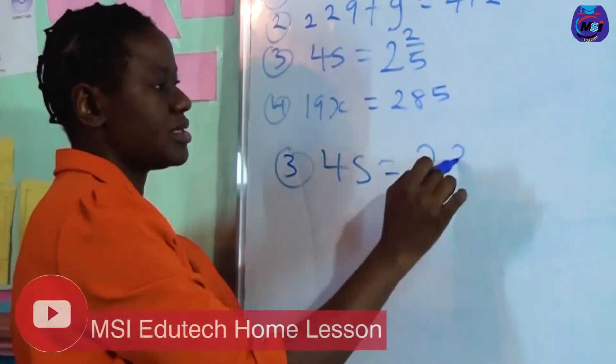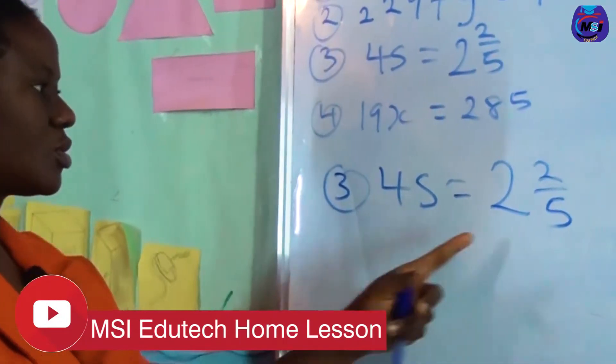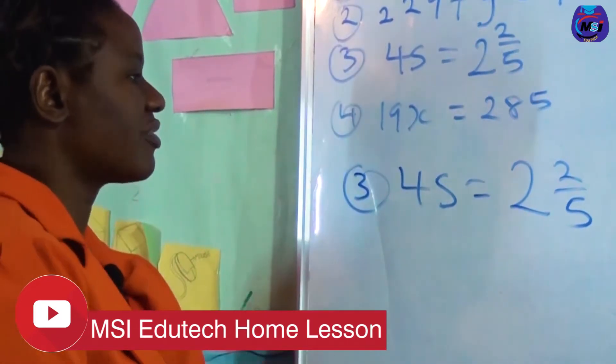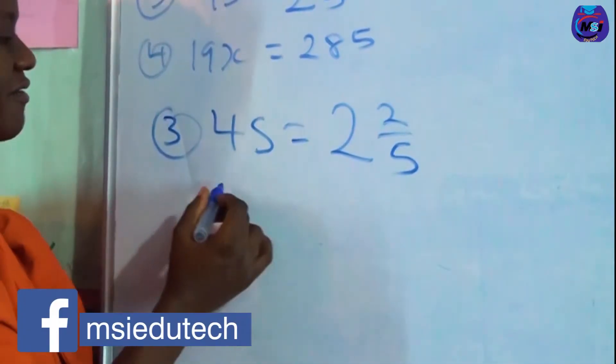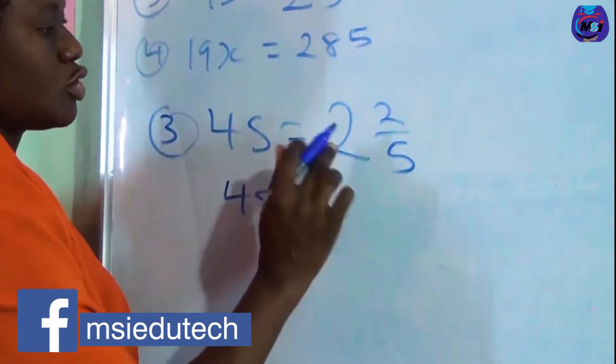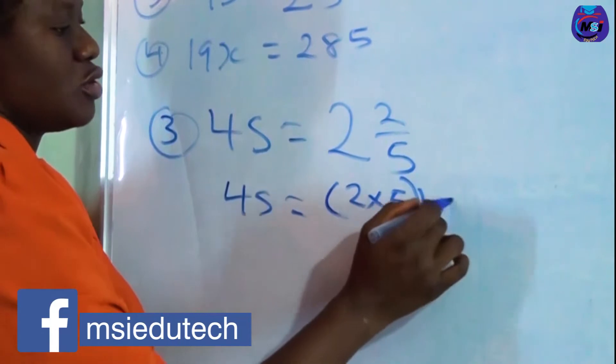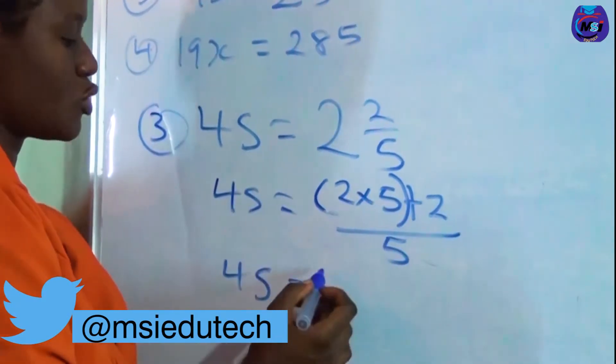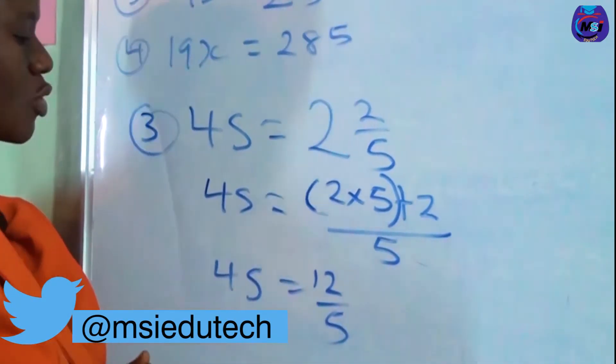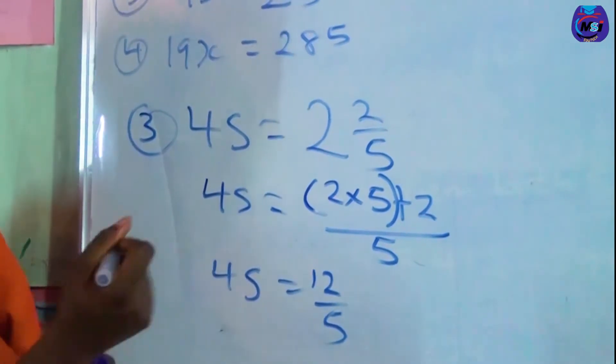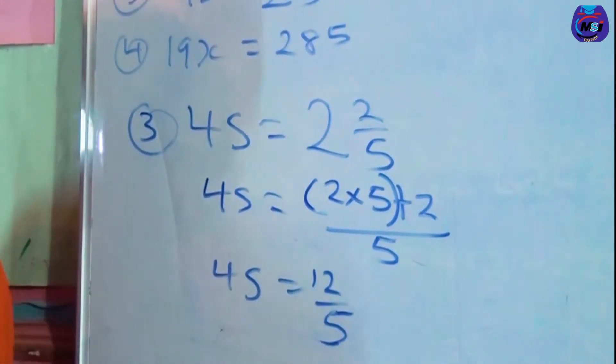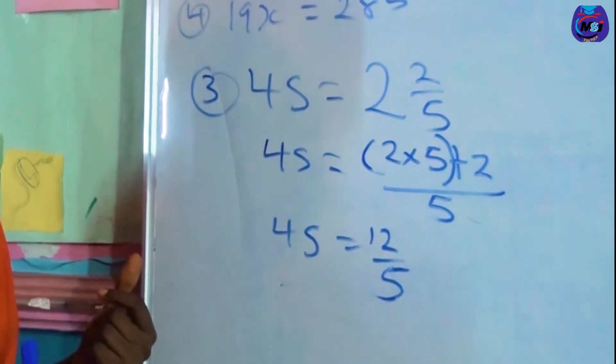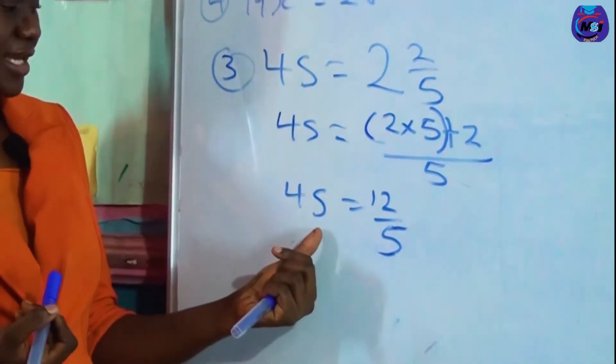4x equals 2 and 2 over 5. We are looking for x. But before then we need to work on this mixed fraction. 4x equals 2 times 5 is 10 plus 2 is 12, 12 over 5. So we've got 4x equals 12 over 5. Now we need x to be alone, so what do we have to do here for x to stand alone?